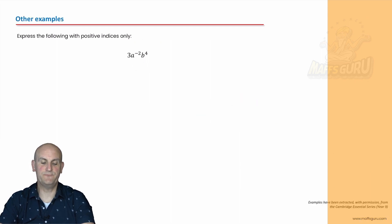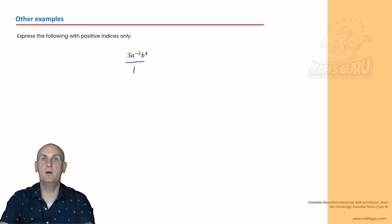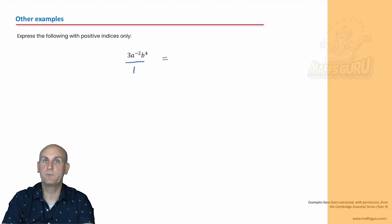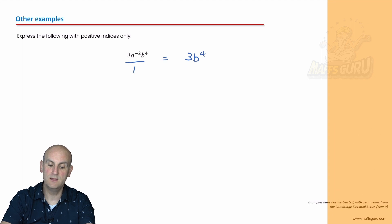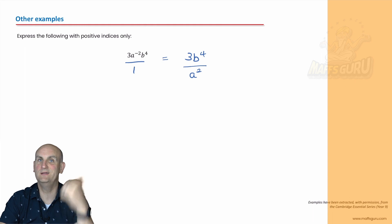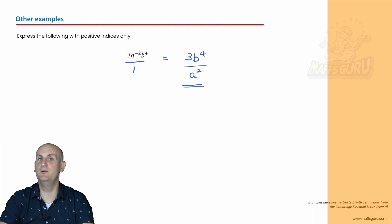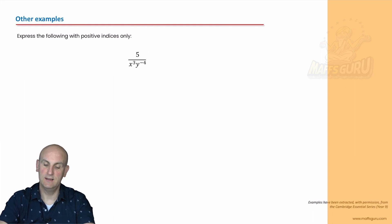Other examples — express the following with positive integers only. We've got three a to the minus two b to the power of four. Only one of those has a negative power. It's on the numerator — I'm going to move it to the denominator. All the positive ones: three is a positive power and b to the power of four stays exactly where it is. It's only the a to the minus two that moves underneath and we ditch the minus sign.